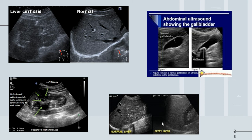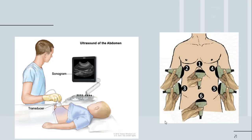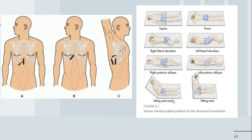These are the different positions for abdominal ultrasound and the different probe positions depending on which organ you want to view. There is an elaboration of the positions used: supine, prone, right lateral decubitus, left lateral decubitus, right posterior oblique, left posterior oblique, sitting semi-erect, and sitting erect. That would be all for today, thank you.